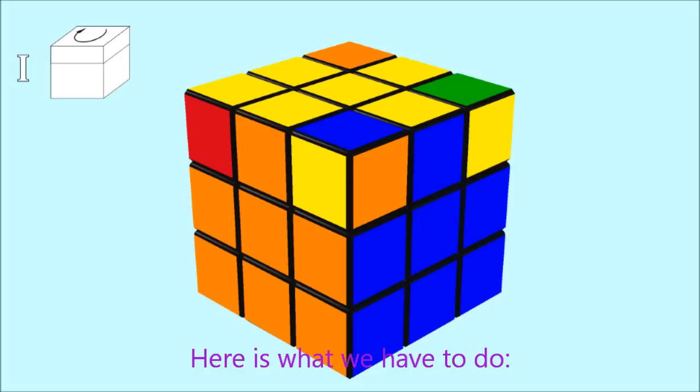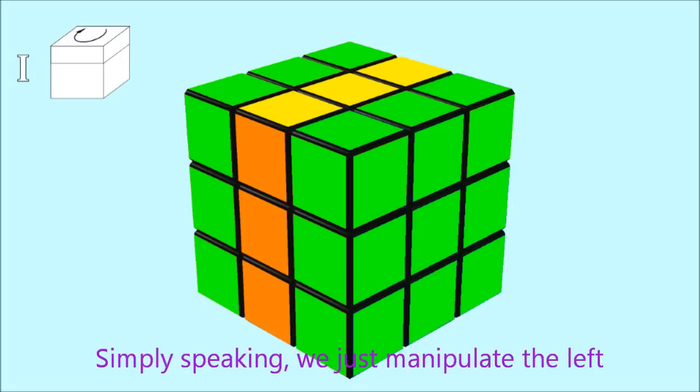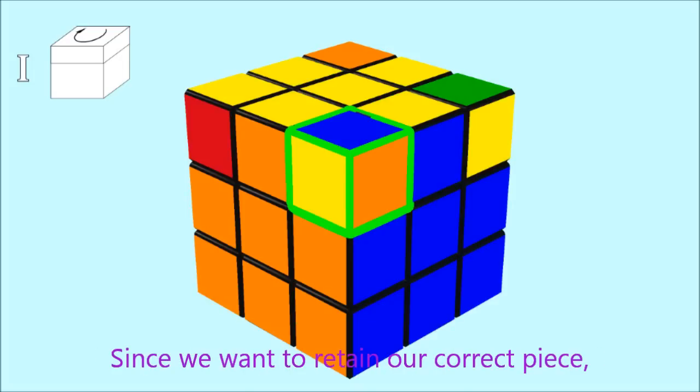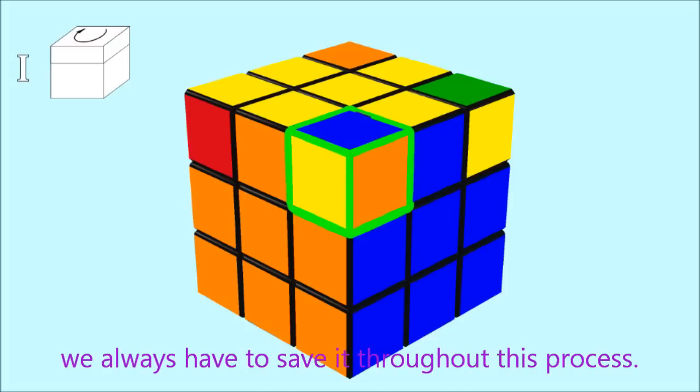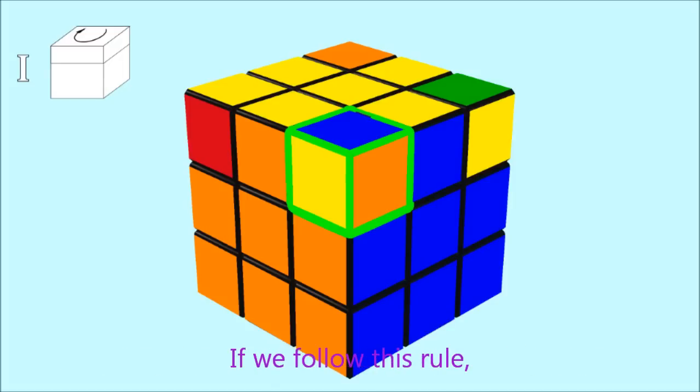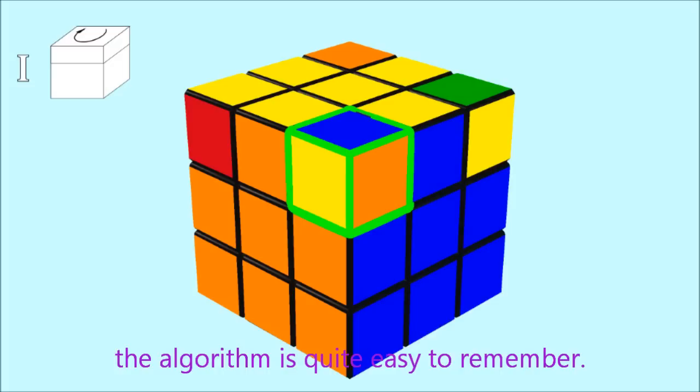Here is what we have to do. Simply speaking, we just manipulate the left and the right layer. Since we want to retain our correct piece, we always have to save it throughout this process. If we follow this rule, the algorithm is quite easy to remember.